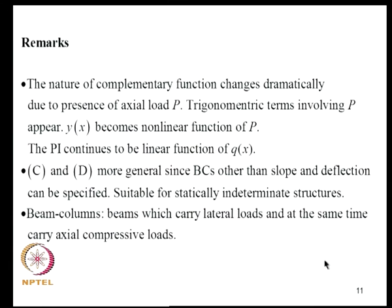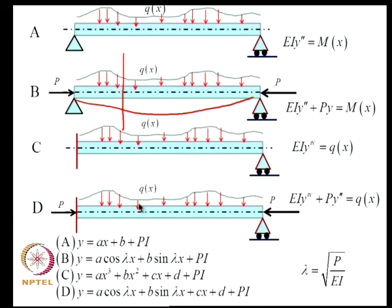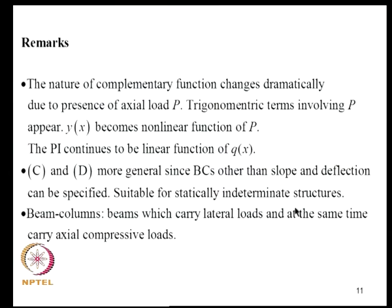The fourth-order equations (cases C and D) are more generally applicable; they allow boundary conditions such as fixed and free ends and are suitable for statically indeterminate structures. Structures carrying lateral loads and axial compressive loads simultaneously are known as beam columns.